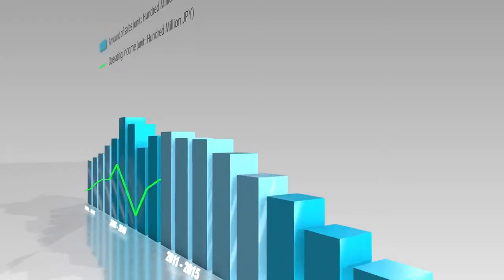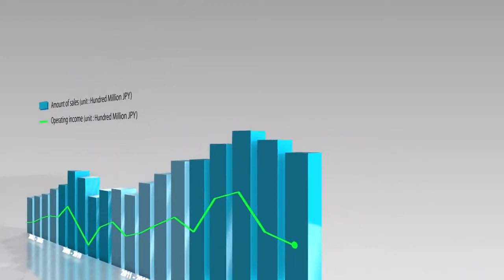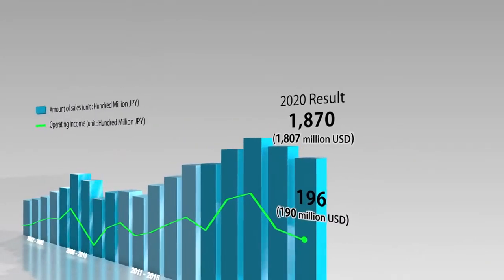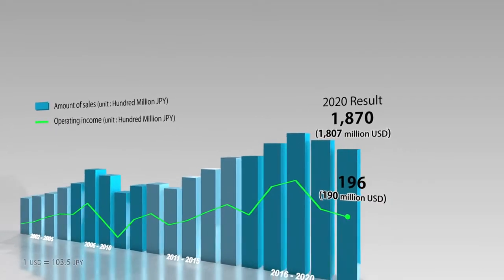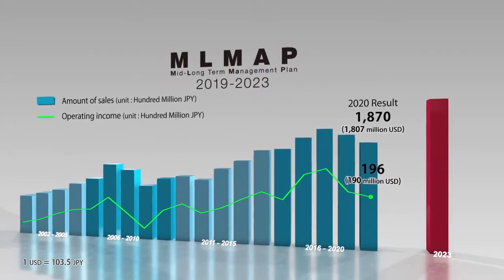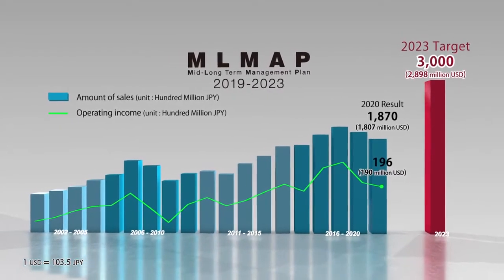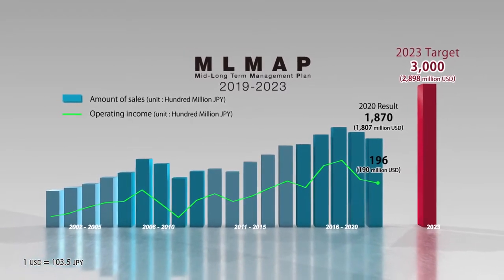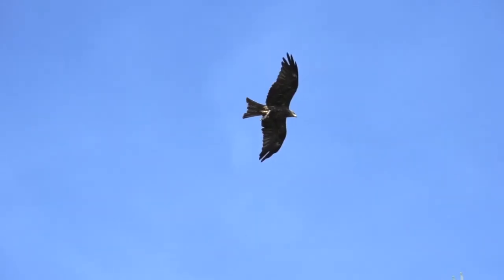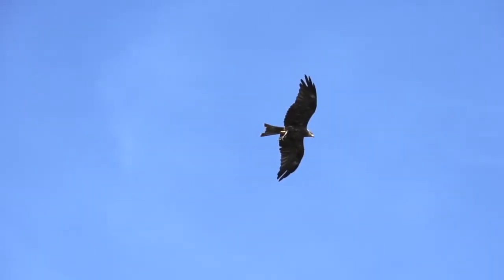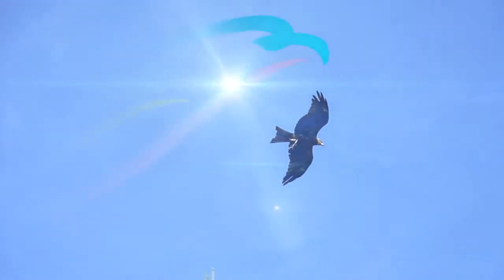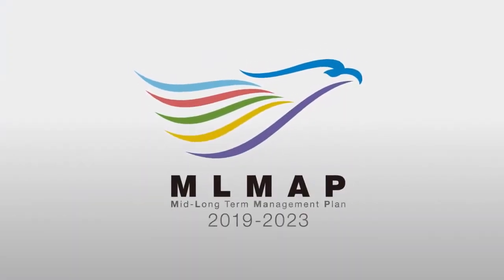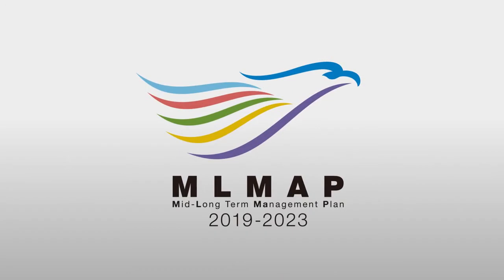We have rolled out a medium to long-term management plan, MLMAP 2023, with the objective of achieving further growth by expanding our areas of business and building new business models. The hawk is our symbol of MLMAP. The hawk is a bird that takes aim at its targets from a viewpoint high in the sky and then swoops down to achieve these targets swiftly and precisely.